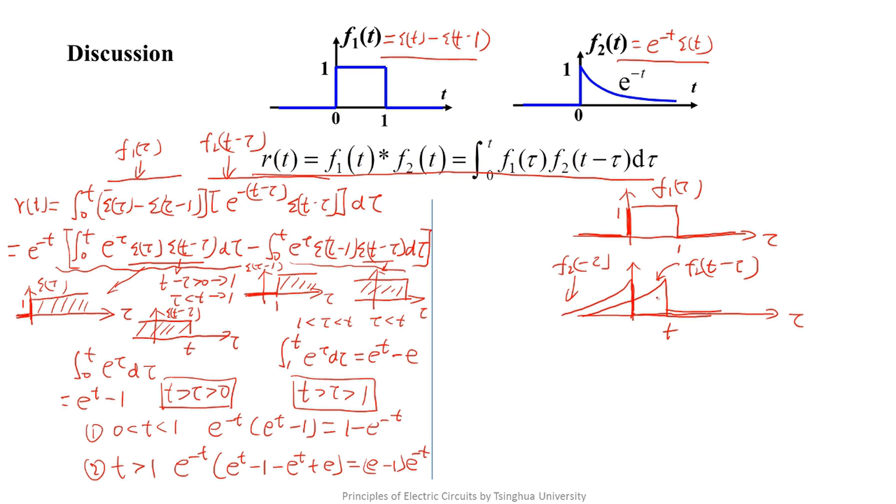Then we can use the graph to observe the upper and lower limits of the convolution integral. You see, f1(tau) has non-zero value when tau is between 0 and 1. f2(t minus tau) has non-zero value when tau is less than t.